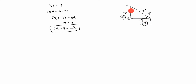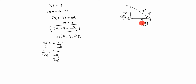Now we will calculate sec R. Sec R is equal to hypotenuse by adjacent, which is also 1 by cos R, since cos R equals adjacent by hypotenuse. The hypotenuse is 41 and the adjacent is 9, so sec R equals 41 by 9. Tan R equals opposite by adjacent. The opposite is 40 and adjacent is 9, so tan R equals 40 by 9.